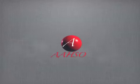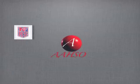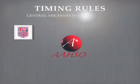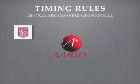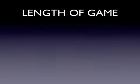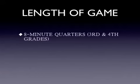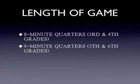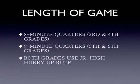This presentation is brought to you by the Arkansas Association of High School Officials. These are timing rules for the Central Arkansas Pee Wee Football League, governed by the National Federation of High School Rules. Third and fourth grade games will be eight minute quarters. Fifth and sixth grade games are nine minute quarters. All games are governed with the junior high hurry up rule.